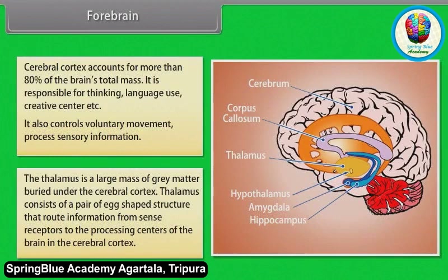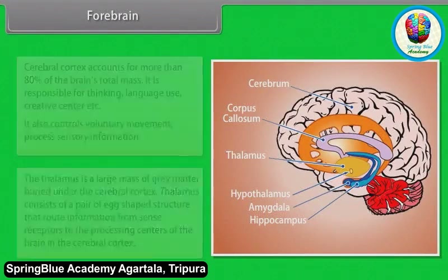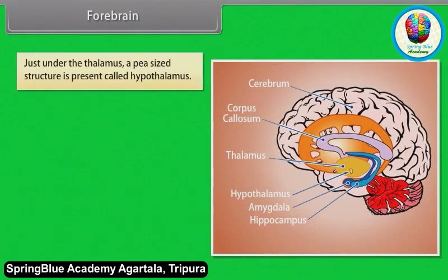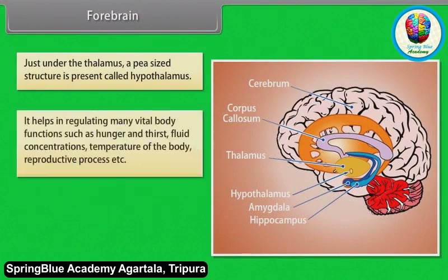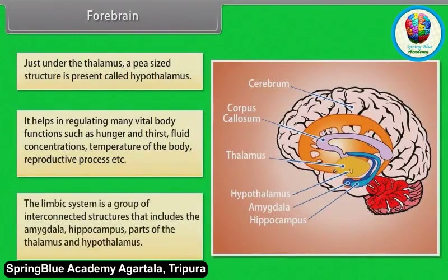The thalamus is a large mass of grey matter buried under the cerebral cortex. It consists of a pair of egg-shaped structures that route information from sense receptors to the processing centers of the brain in the cerebral cortex. Just under the thalamus, a pea-sized structure called the hypothalamus helps regulate many vital body functions such as hunger and thirst, fluid concentrations, body temperature, and reproductive processes. The limbic system is a group of interconnected structures that includes the amygdala, hippocampus, and parts of the thalamus and hypothalamus.